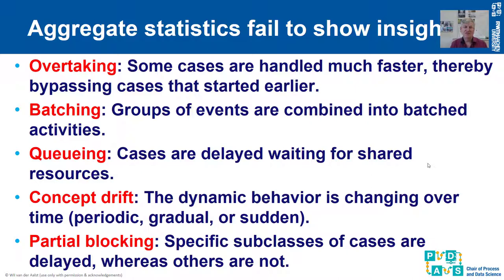These aggregate statistics fail to describe phenomena like tokens overtaking each other in a place, batching where work is saved up and done in one go, queuing behavior where tokens have to wait longer because of the presence of other tokens, drifts where the process is changing over time, and forms of partial blocking where some cars can pass a particular point but others get stuck. All of these phenomena you cannot see by just looking at process models colored with red or thick arcs.